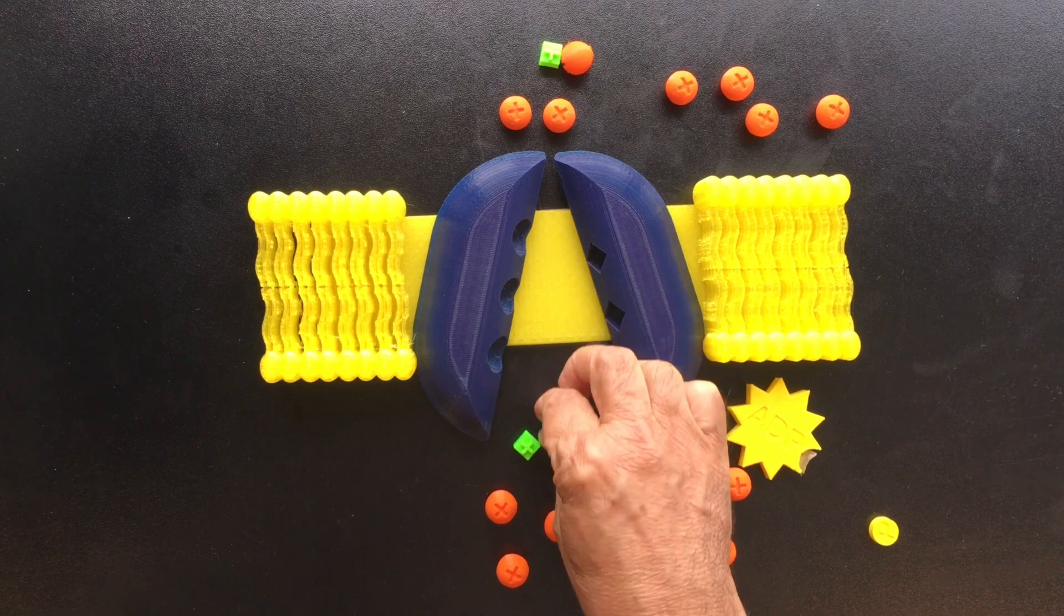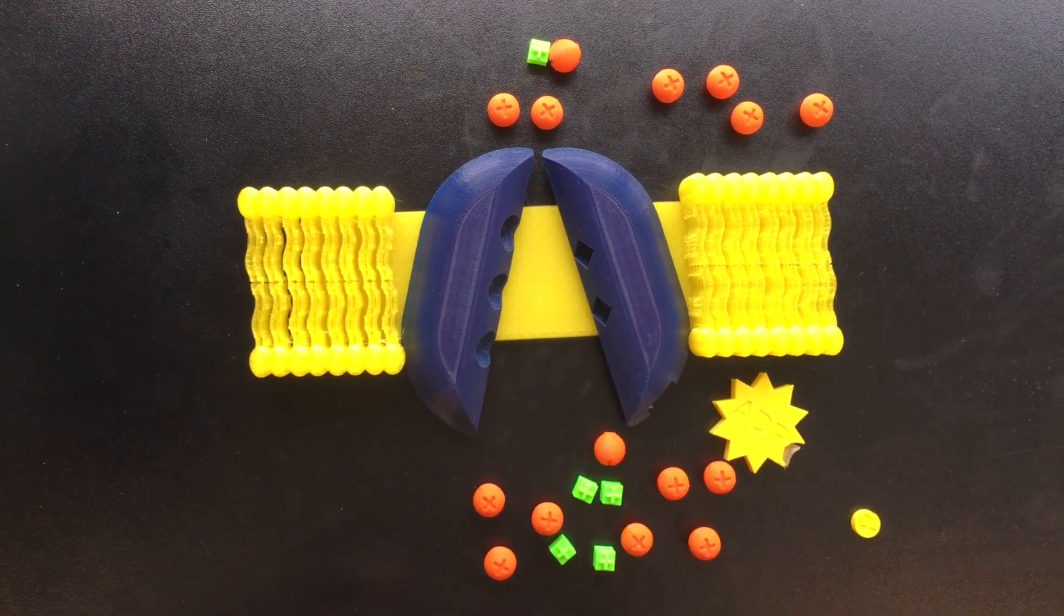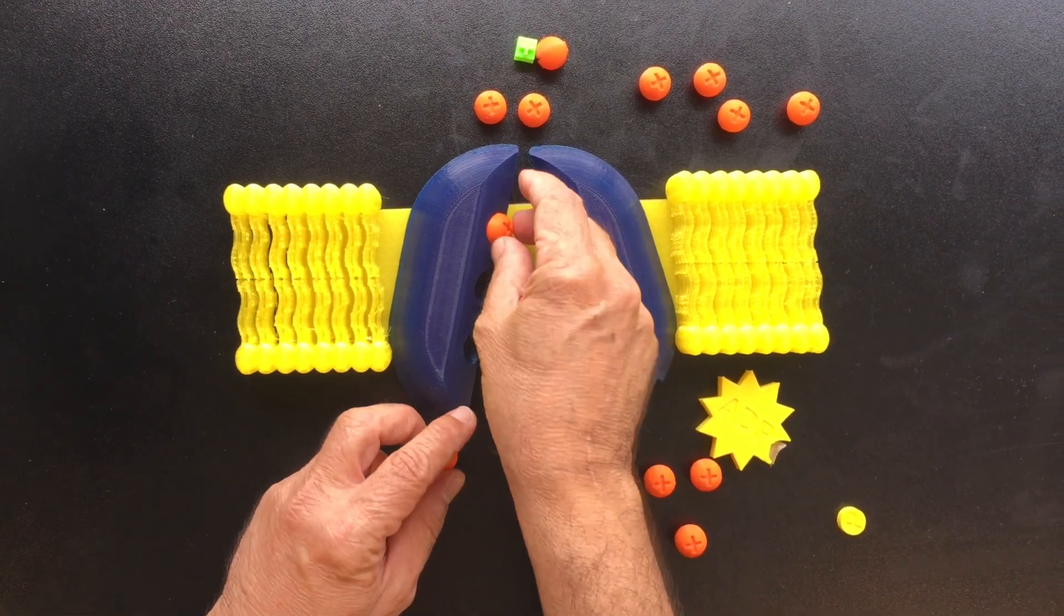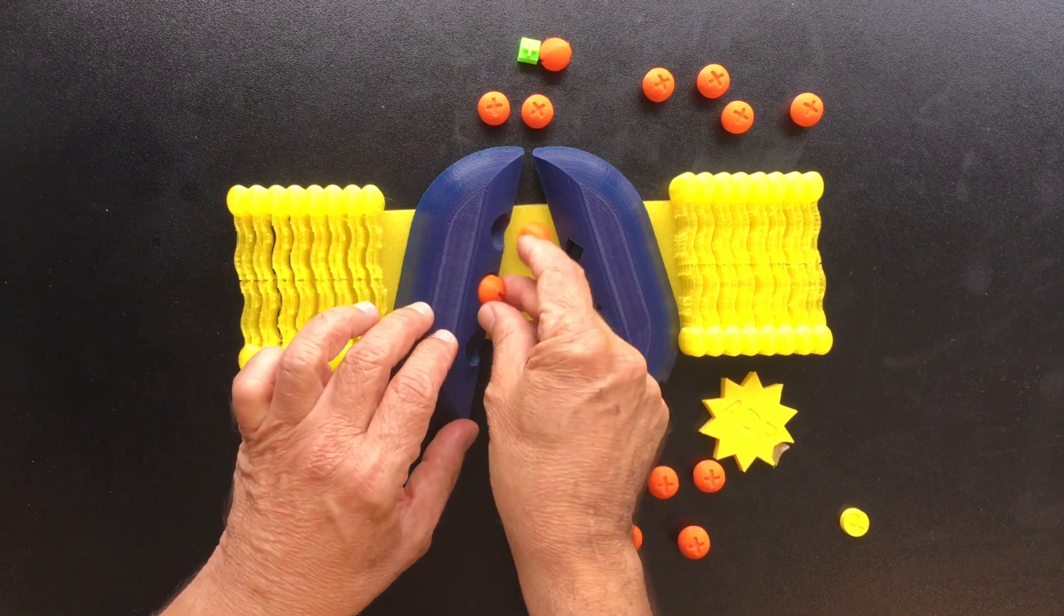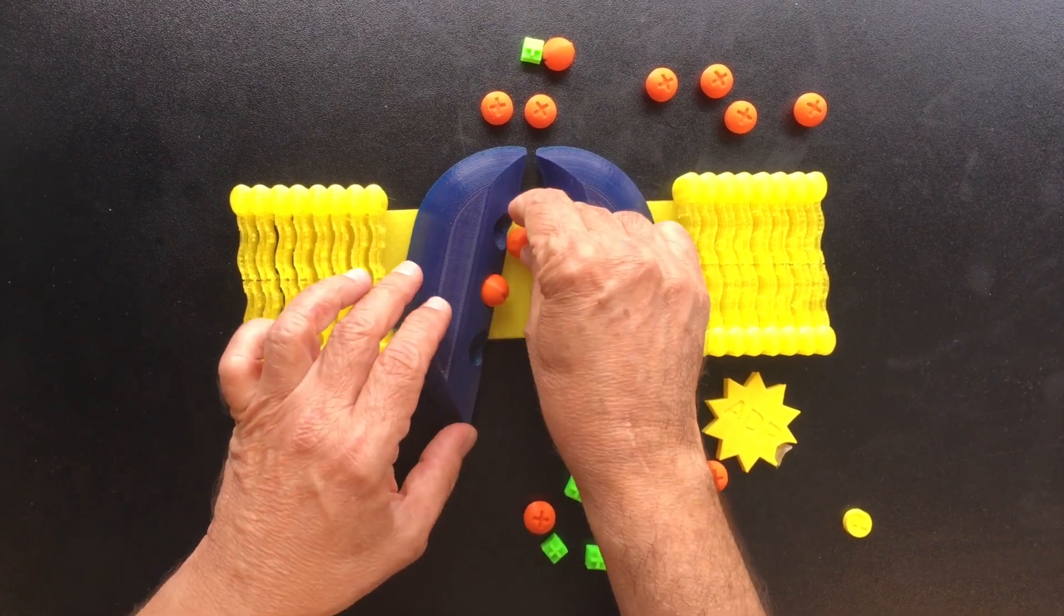The two potassium ions are then released inside of the cell, and the whole process is again repeated. So we have three sodium ions.